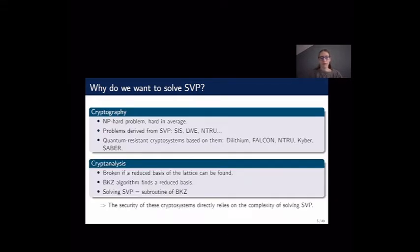From a cryptanalysis point of view, all of these cryptosystems are broken if we can find a reduced basis of the lattice being used. The BKZ algorithm finds a reduced basis by using an oracle that solves SVP as a subroutine. So in a nutshell, the security of these cryptosystems directly relies on the complexity of solving SVP.